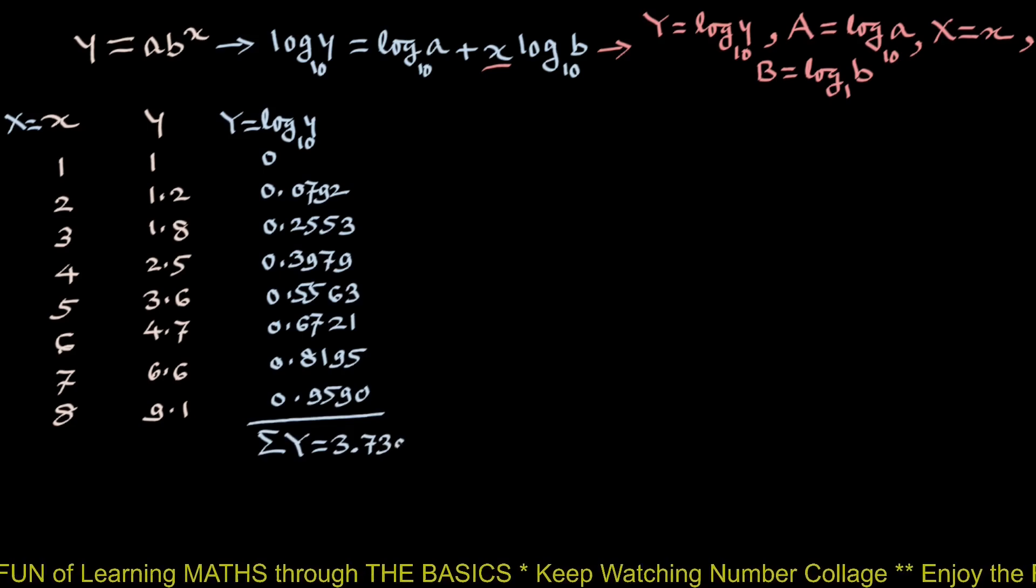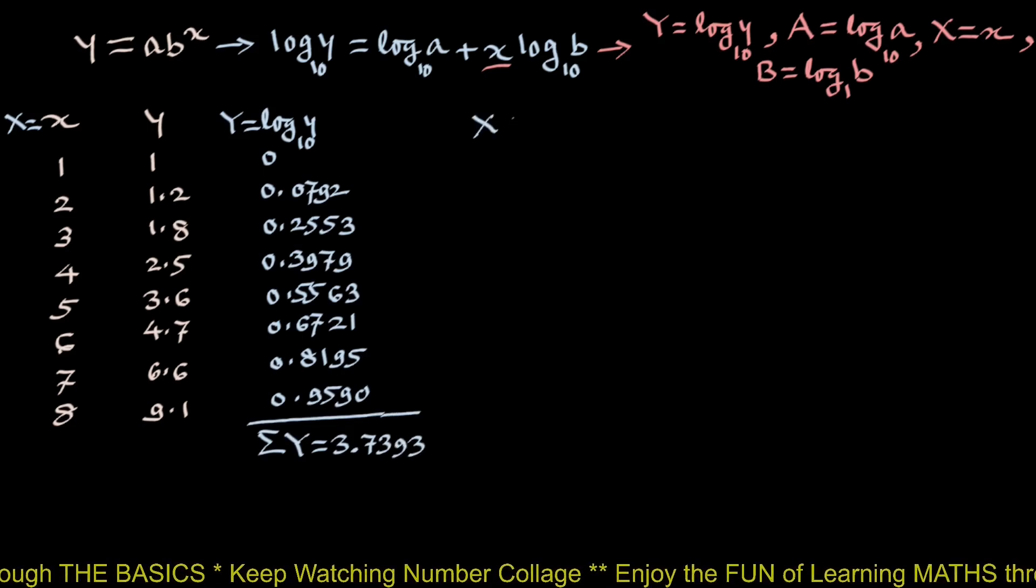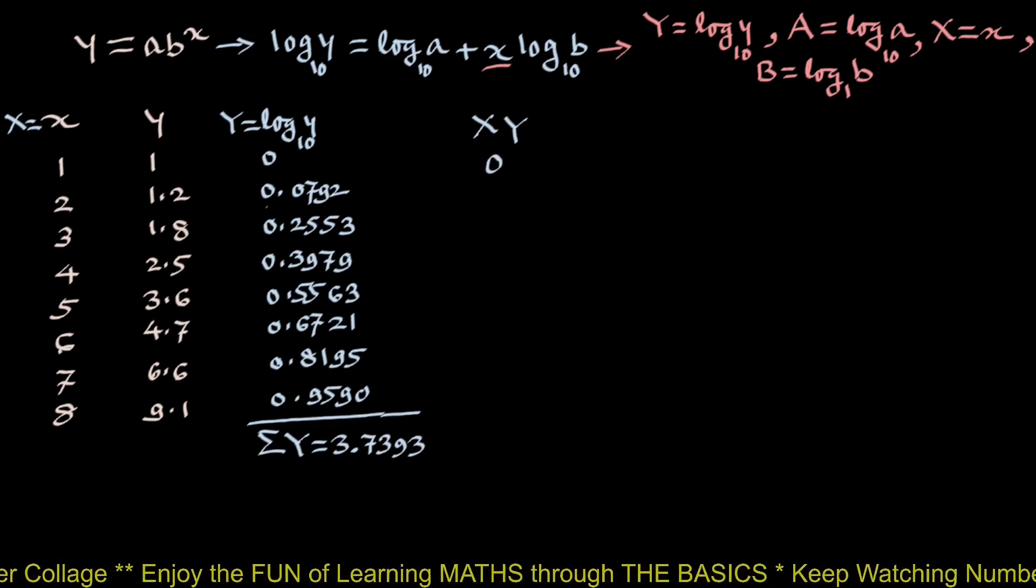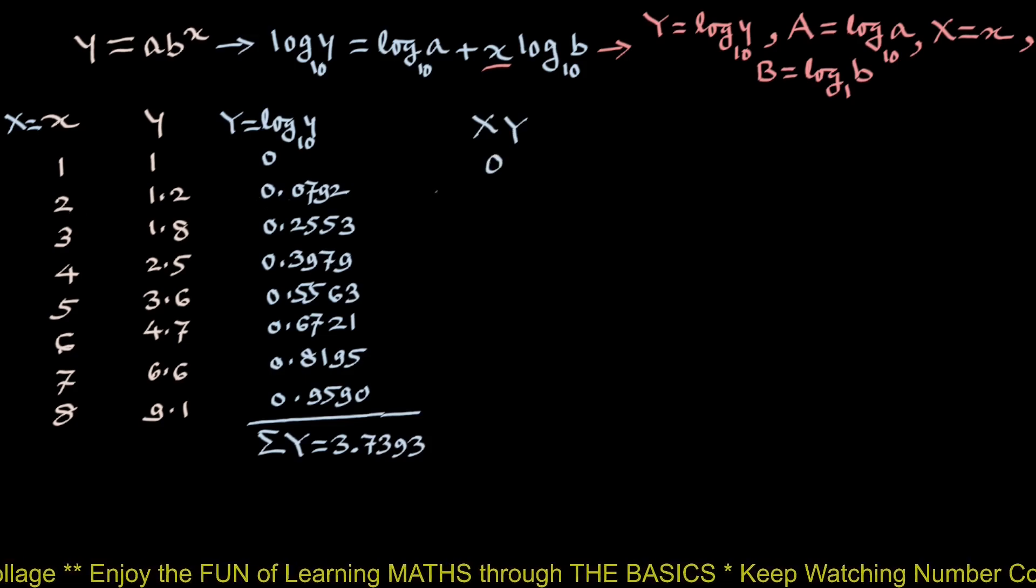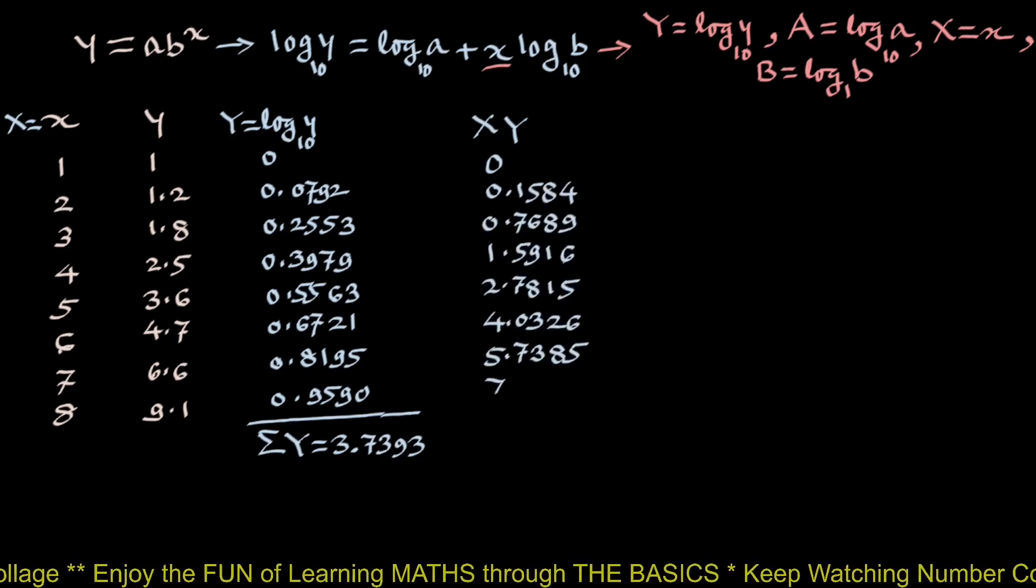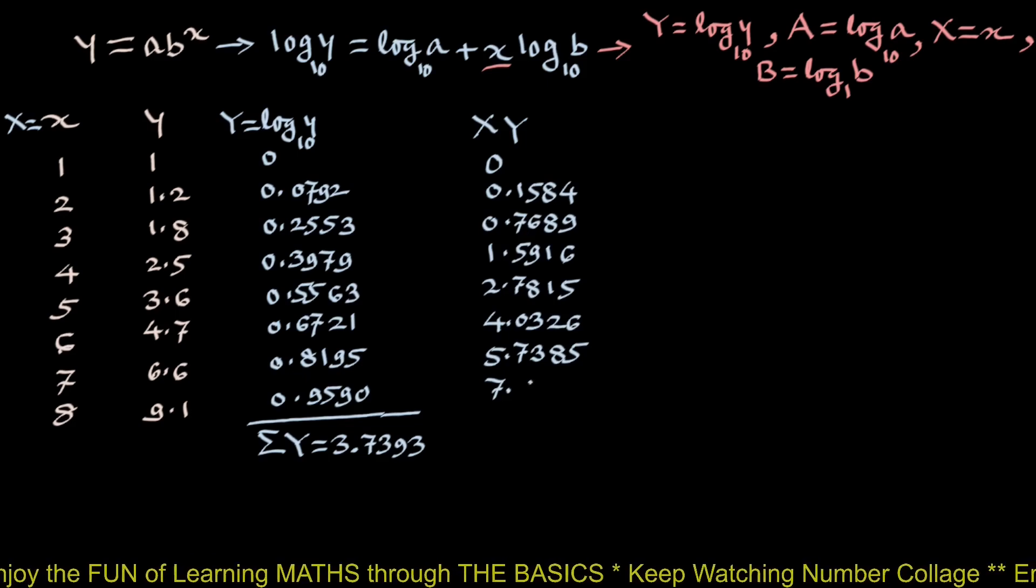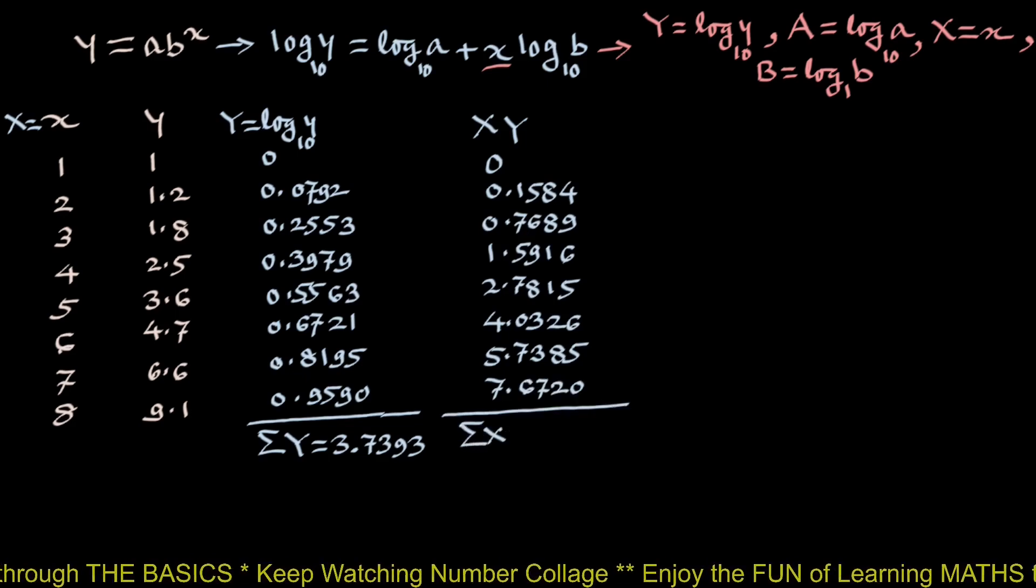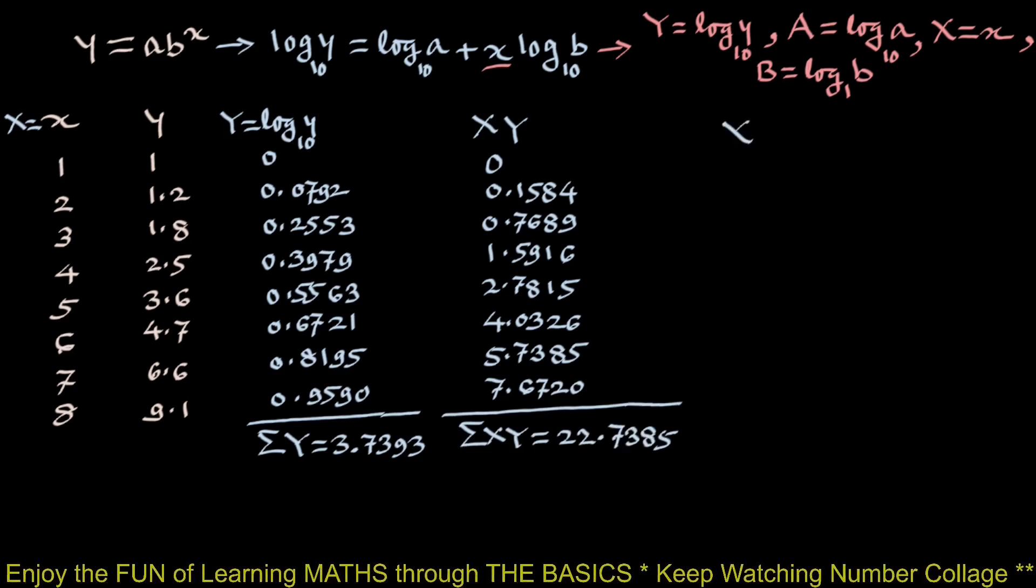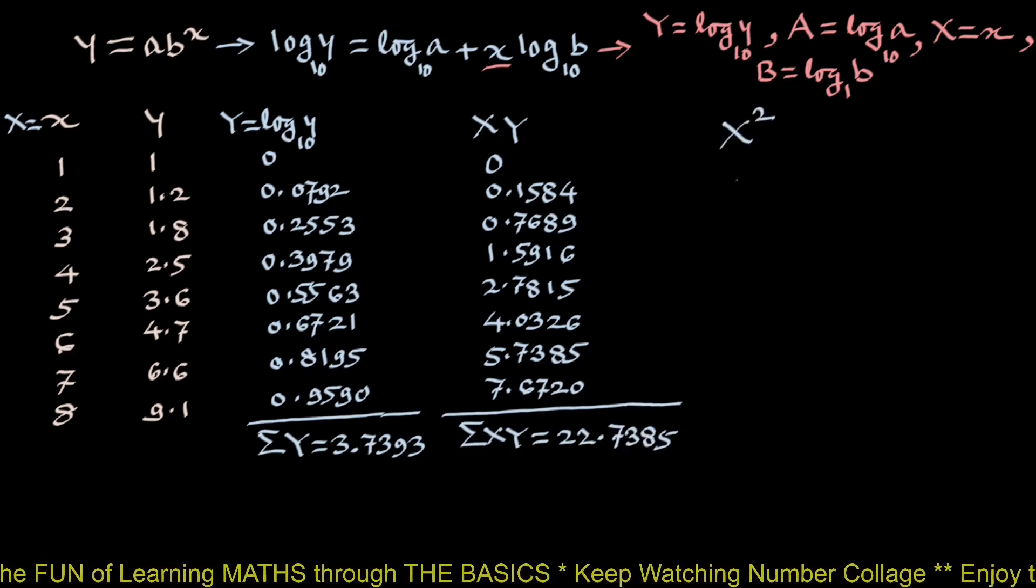Next column product capital X, capital Y. 1 into 0 is 0, 2 into 0.0792 is 0.1584, etc. and 7.6720 and summation XY is 22.7385.